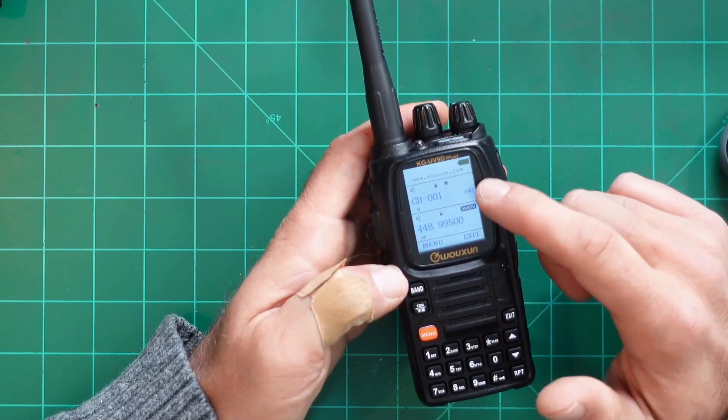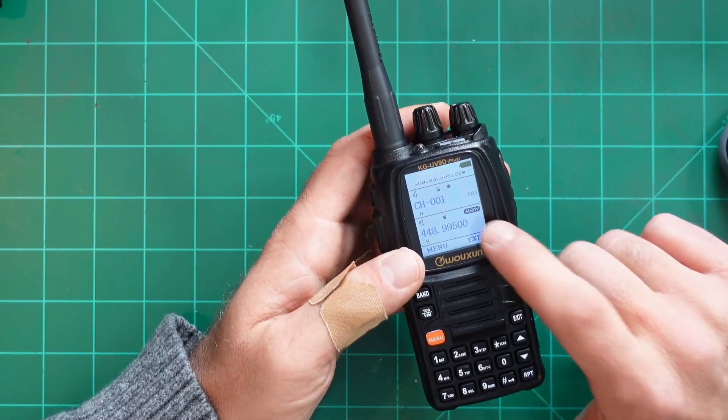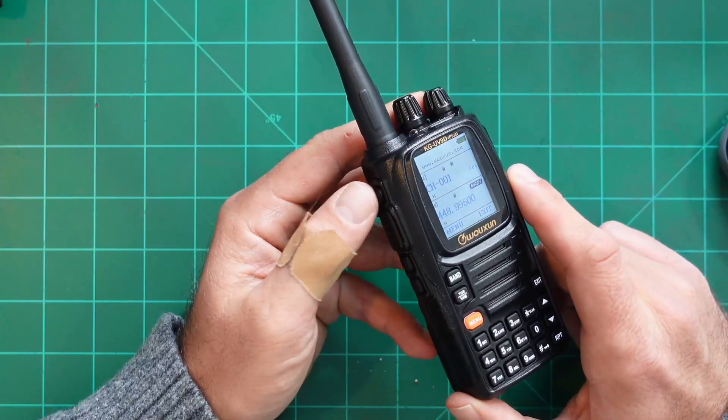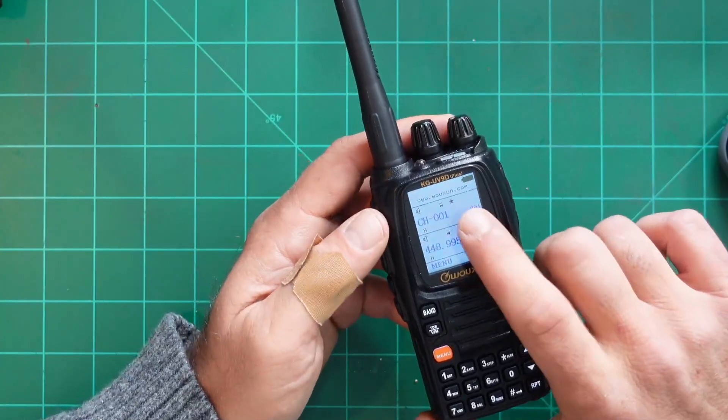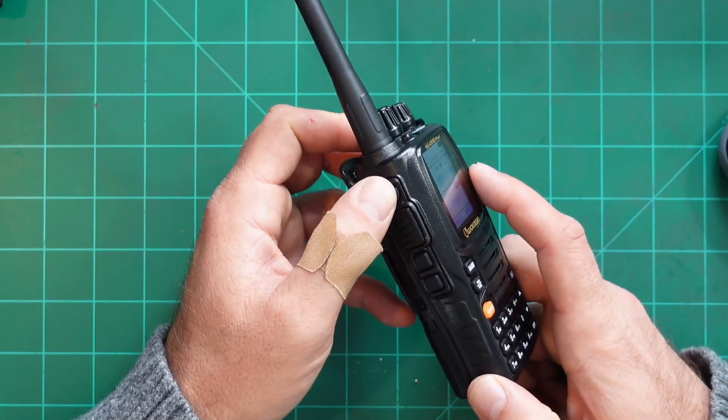If I wanted to listen to both simultaneously, I could hit or tap the TDR button. Now we're basically doing our dual receive. Whenever I transmit, it's going to transmit on the main frequency. However, if I were to tap this button here, it would transmit on the sub frequency.